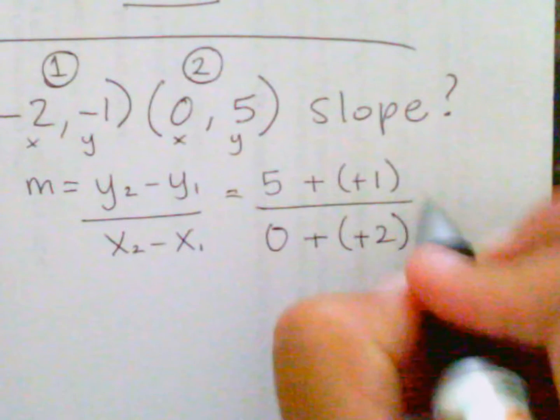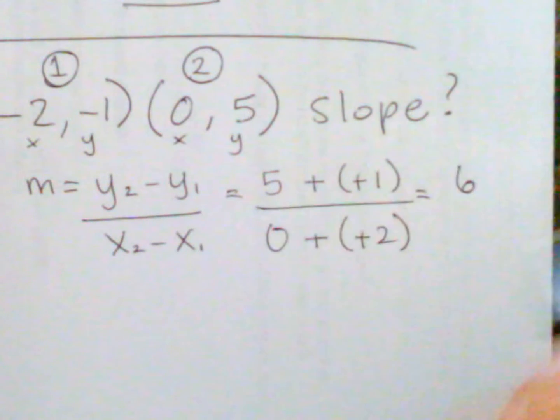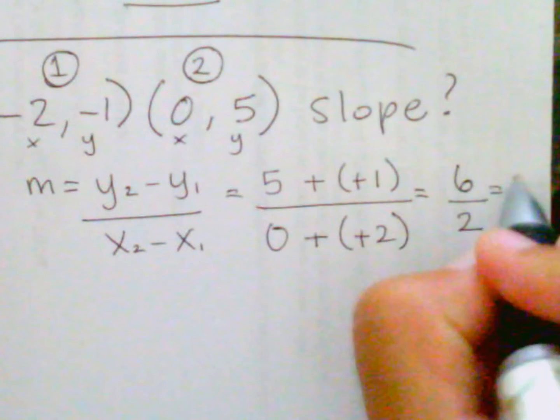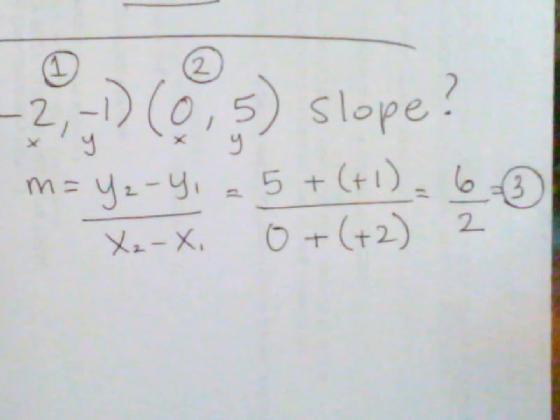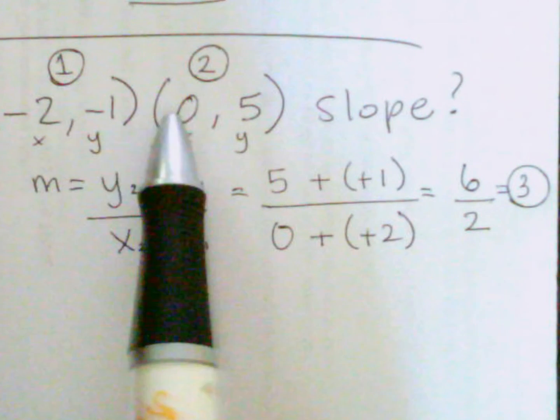So what we end up with here is 5 plus 1 is 6, 0 plus 2 is 2, and 6 divided by 2 equals 3. So the slope for the line that contains these two points is 3.